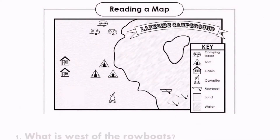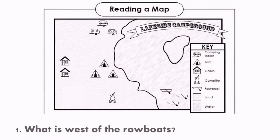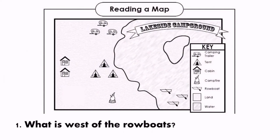What is west of the rowboats? You're right! The answer is campfire.